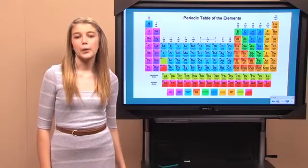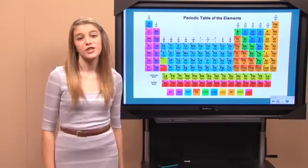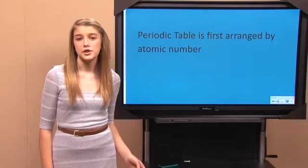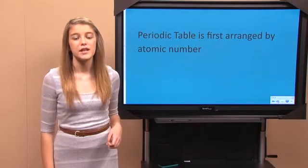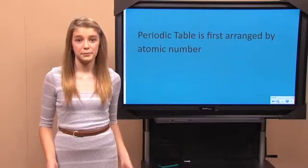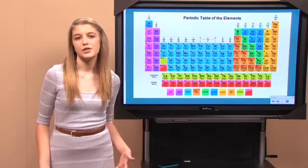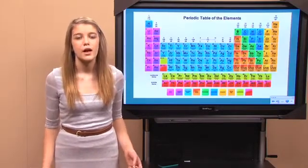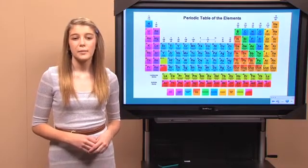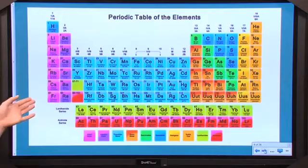The periodic table is laid out in the order of atomic number. Maybe you remember that the atomic number determines the identity of the element, and it's the number of protons that determines the element's atomic number. So it's like the driver's license of carbon is six, because only carbon has six protons. This means that carbon is the sixth element in the periodic table.